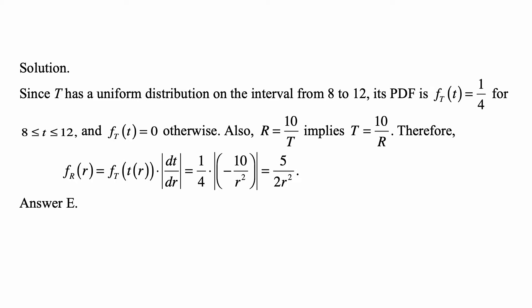And we just use the basic formula for the density of a transformation of any variable, so f_R(r) equals f_T(t) at the corresponding value of t, times the absolute value of the derivative of the inverse of the transformation. And we just calculated that inverse: T equals 10 over R.